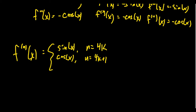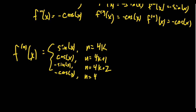The next case gives negative sine of x, which happens when n is a multiple of four plus two — that is, an even number that's not itself a multiple of four, like two, six, ten, fourteen. You're always going to get negative sine of x. And lastly, you'll get negative cosine of x whenever n equals four k plus three — that is, three more than a multiple of four, or one less than a multiple of four — like three, seven, eleven.